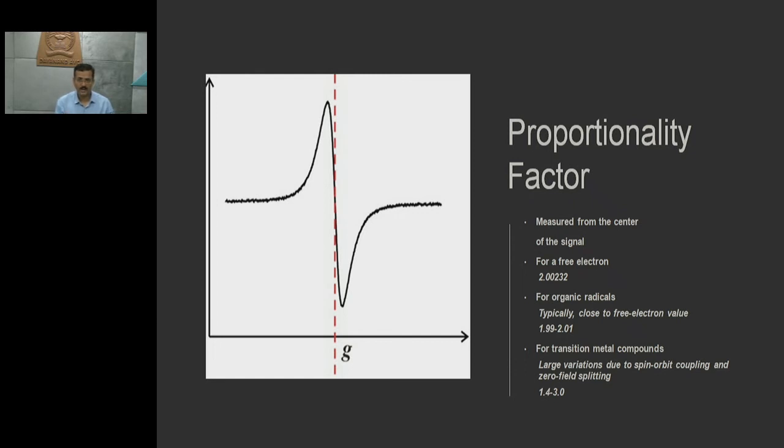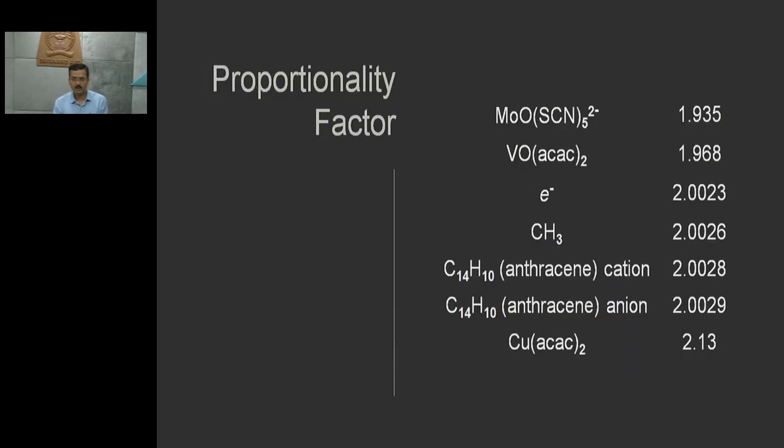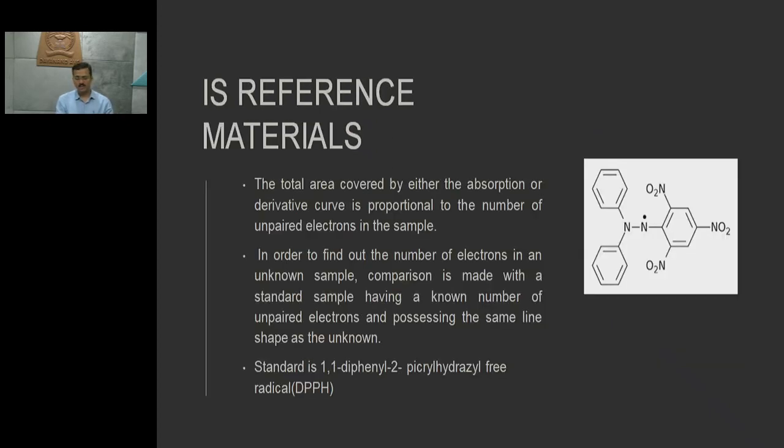Therefore, this G factor or proportionality factor is very important to measure. Free electron has a value of 2.0023. For organic radicals ranging from 1.99 to 2.01. For transition metals, there's a wide range because of spin-orbital coupling and zero-field splitting, losing Kramers degeneracy. The range is 1.4 to 2.3. These are some molecules which have their proportionality factor and would be variable with respect to different molecules.